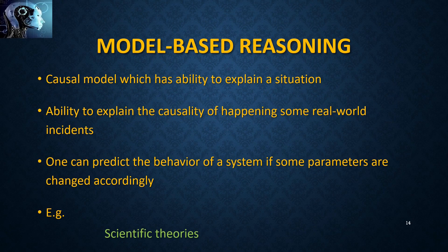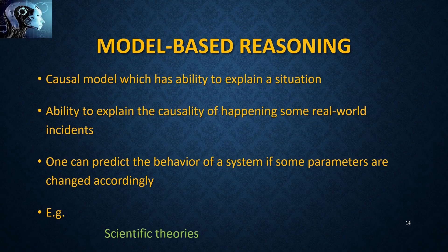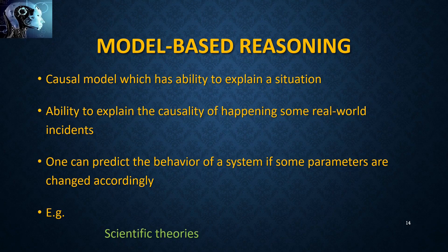Model-based reasoning is considered a very difficult technique. For example, scientific theories are models that can explain premises and conclusions in real-world situations, like Newton's theory. In some scenarios, after changing the parameters or values of a system, the conclusion can be predicted using this model-based reasoning. Now we have come across several reasoning techniques and discussed several examples. Now you know how to analyze a problem and identify the better reasoning technique among them. Thank you. Have a nice day.